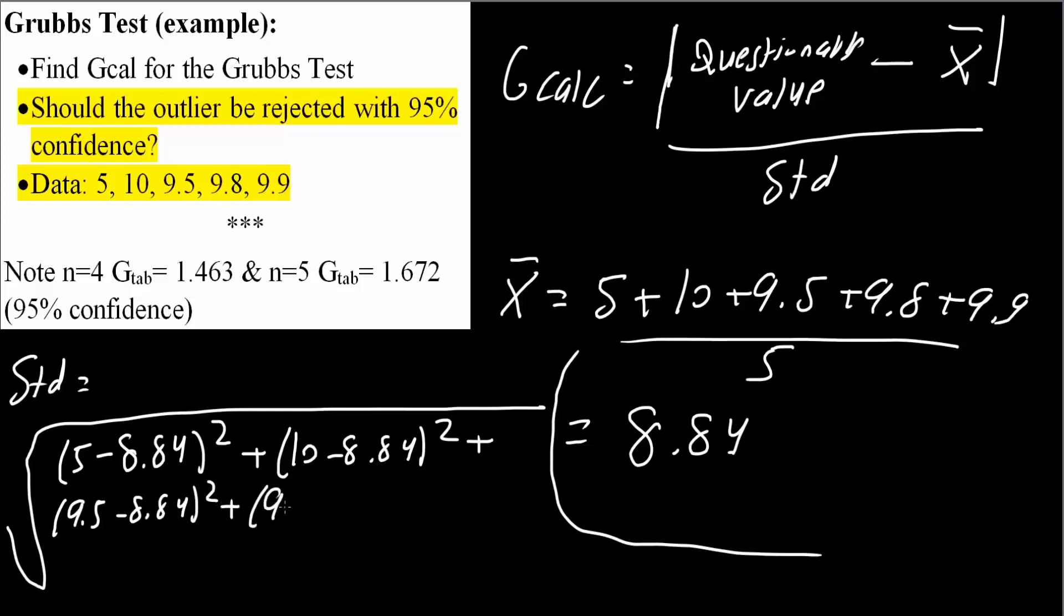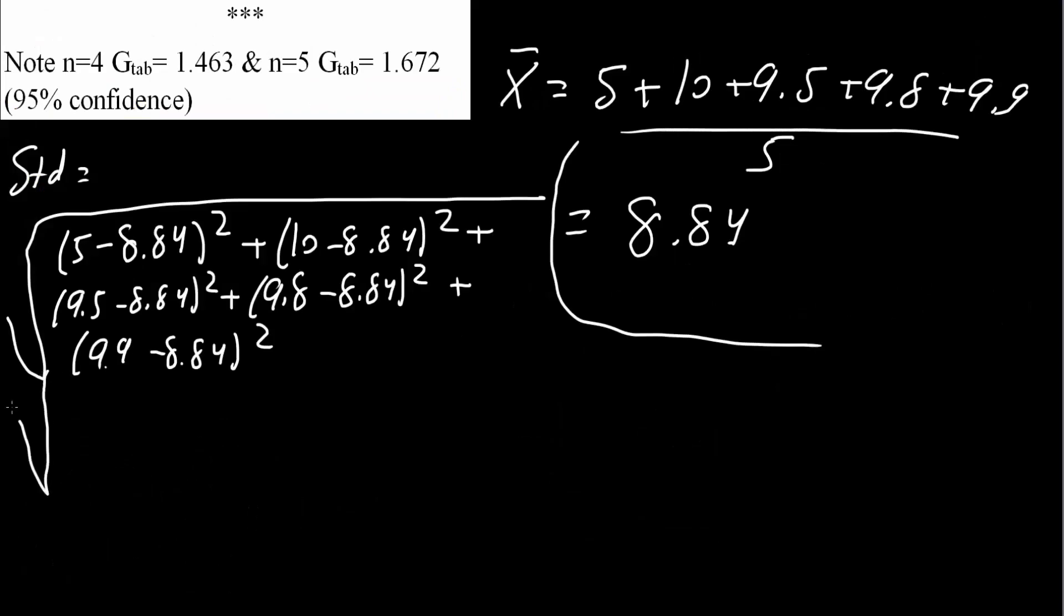plus (9.8 minus 8.84) squared, plus (9.9 minus 8.84) squared. The square root applies to dividing this whole numerator by n minus 1. We have 5 numbers, so 5 minus 1. This gives us 2.155.